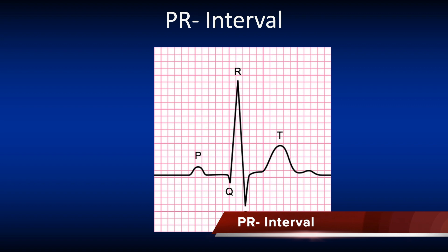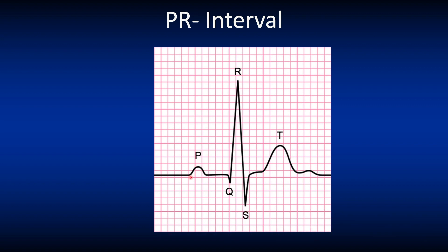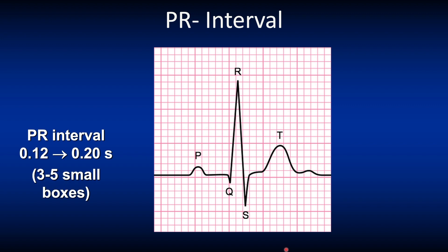Let's look at the PR interval. The PR interval is measured from the beginning of the P wave to the beginning of the Q wave. Normally it measures 0.12 to 0.2 seconds or 3 to 5 small boxes. If it's more than 5 small boxes, it means the PR interval is prolonged.